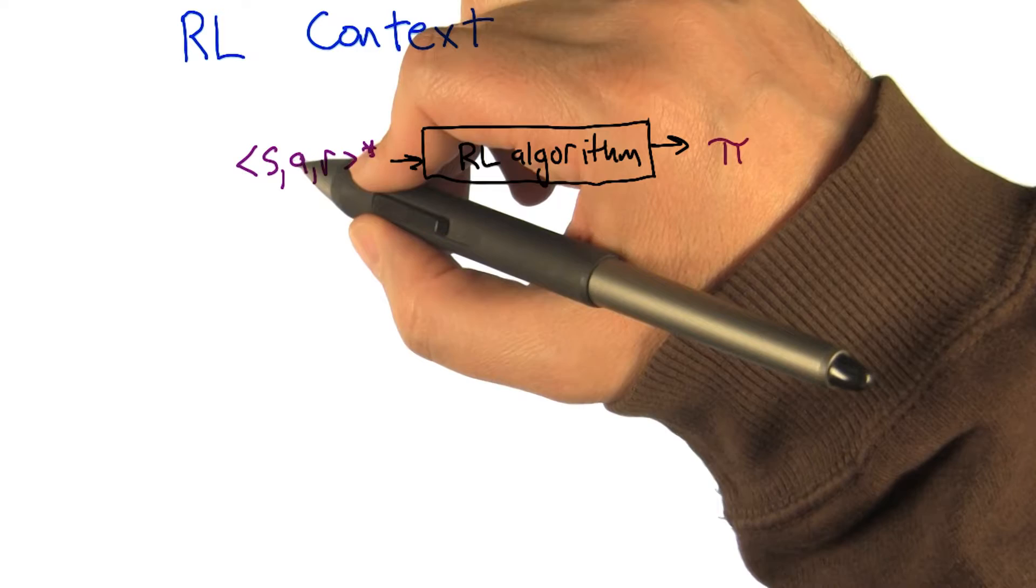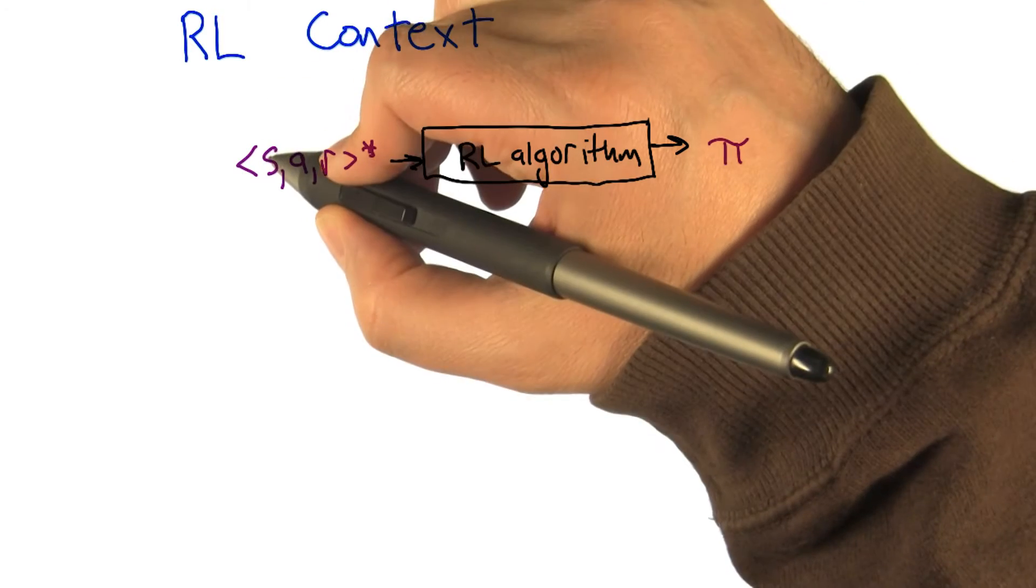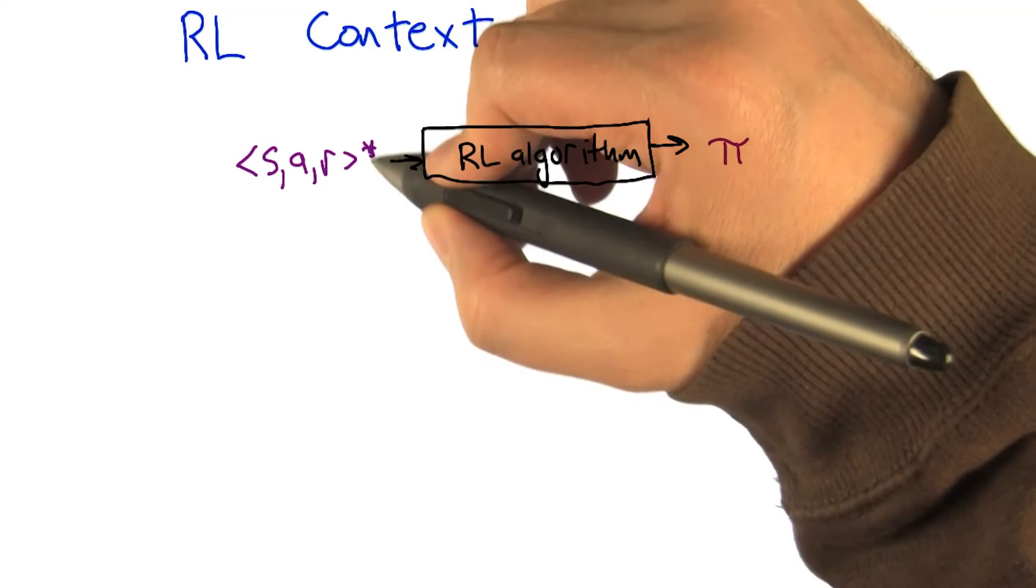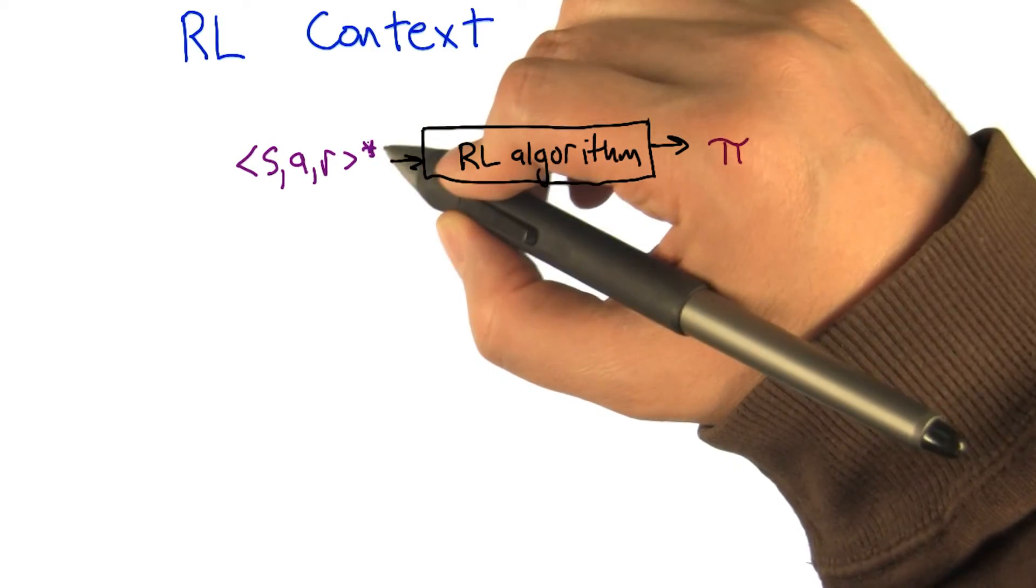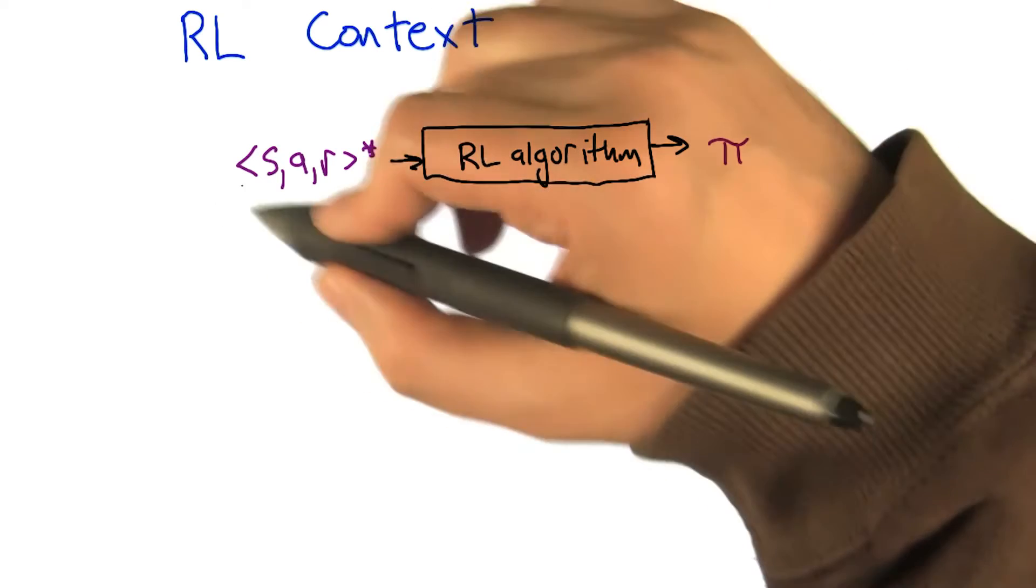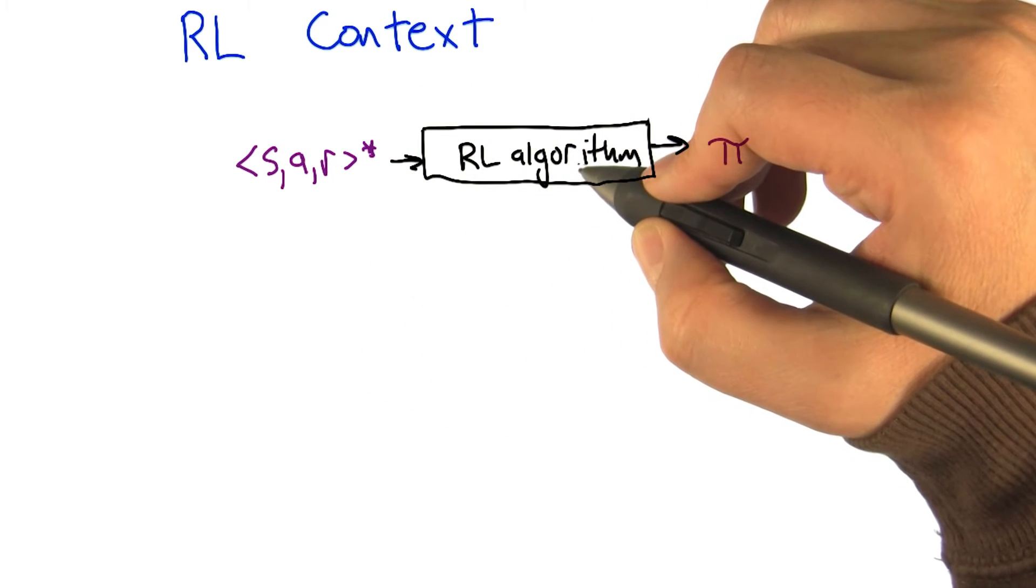Remember we talked about SARS, right? The state action reward sequence. So, I'm in a state, I take an action, I get a reward back, I end up in a new state. I take a new action, I get a new reward, and this just continues. So I put a little Kleene star after it to indicate that this is some sequence of state action rewards.